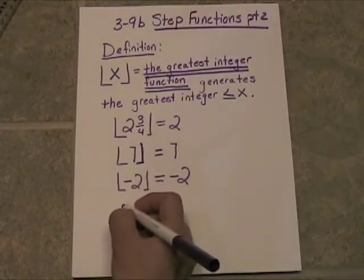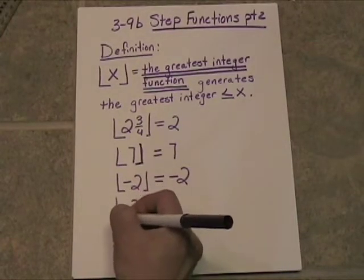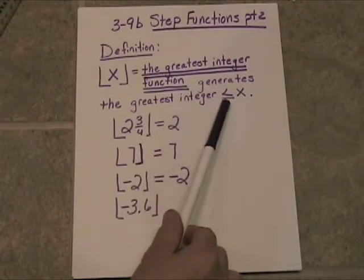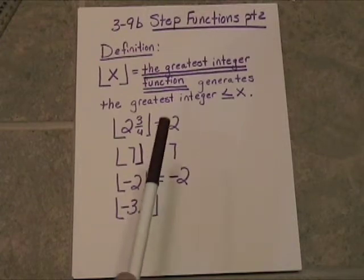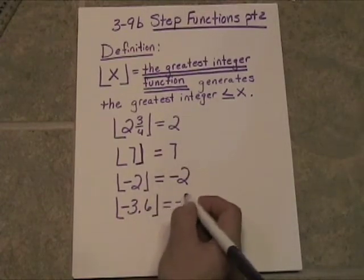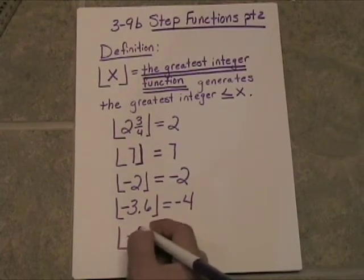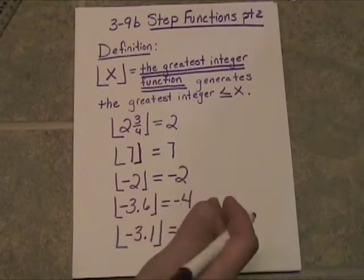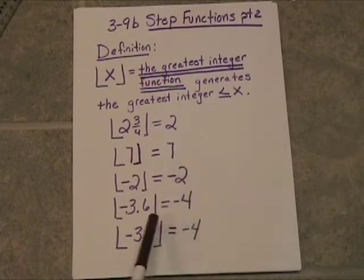What if we took negative 3.6? Is that going to go to negative 3 or negative 4? The greatest integer that is less than or equal to x — I need to find an integer that is less than negative 3.6. That's going to have to go down to negative 4, because negative 4 is smaller than negative 3. In fact, if we put negative 3.1 in here, that is also going to go down — the closest integer that is smaller than this is negative 4, because negative 4 is smaller than negative 3.